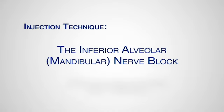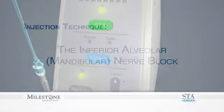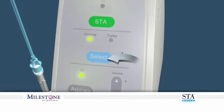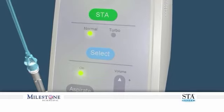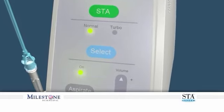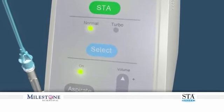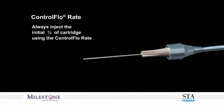Injection Technique: The Inferior Alveolar Mandibular Nerve Block. Set the wand system to the normal mode, which allows the system to function with two distinct flow rates: the controlled flow rate and the rapid flow rate. Utilize the controlled flow rate to administer a minimum of one quarter of the cartridge for the initial phase of the block injection. Once the patient feels the onset of soft tissue anesthesia, transition to the rapid flow rate.